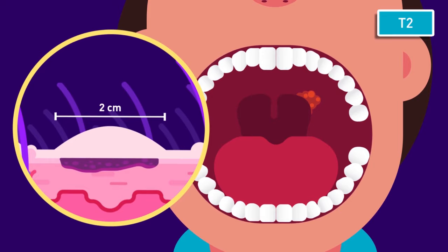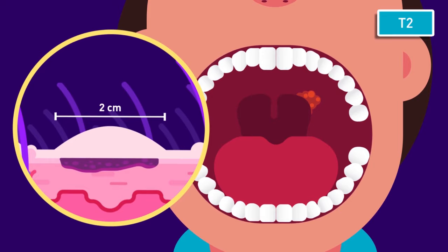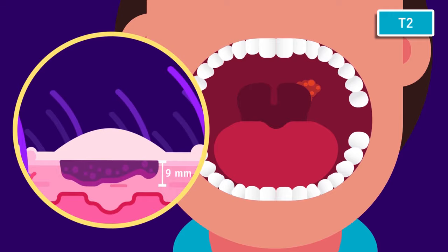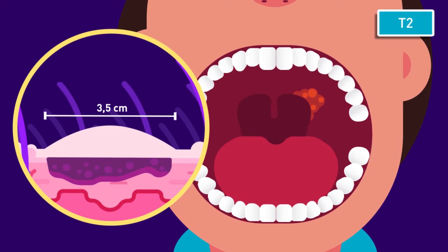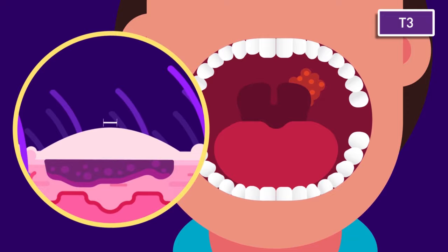T2 can mean different things. The cancer is 2 cm or smaller and it is deeper than 5 mm but no deeper than 10 mm, or the cancer is larger than 2 cm but no larger than 4 cm and it is 10 mm deep or less. T3 means the cancer is larger than 4 cm or deeper than 10 mm.